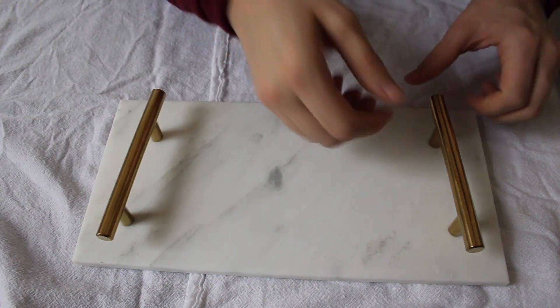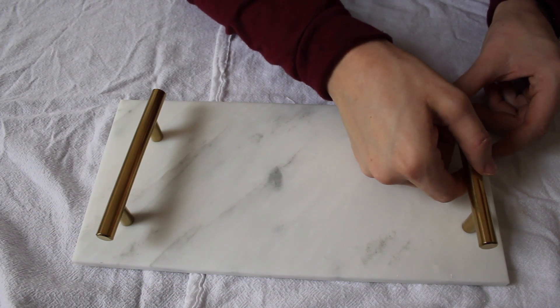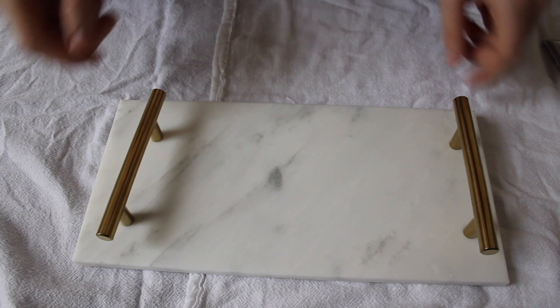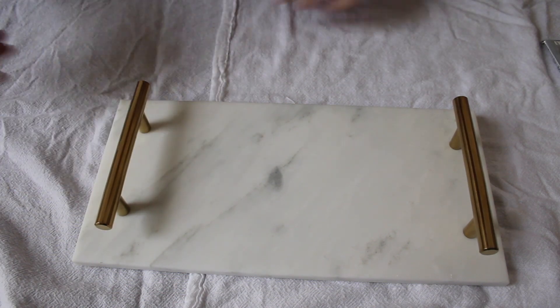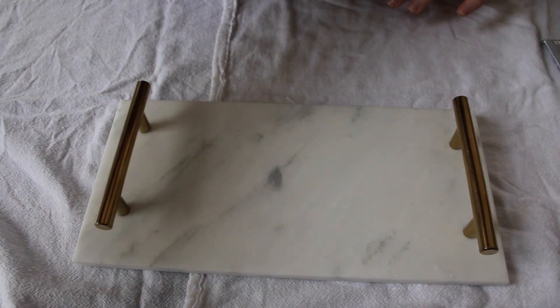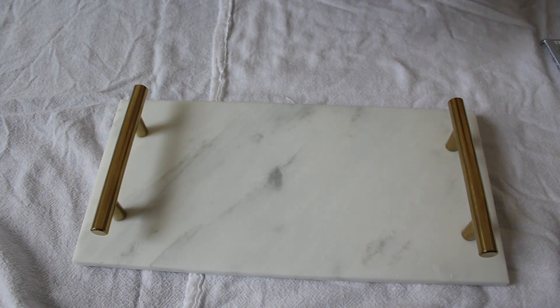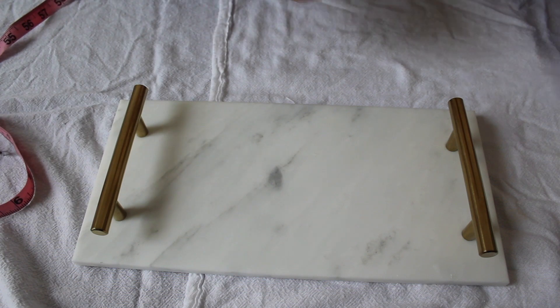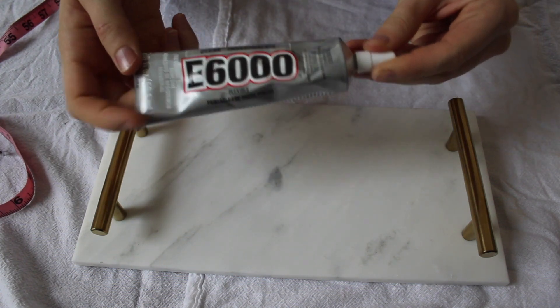Next we're gonna take these two gold pulls and attach them to both sides of the marble slab to be the handles for the tray. I'm actually gonna measure—we have each piece about one and a half inches from the edge, and we're going to take our E6000 glue.